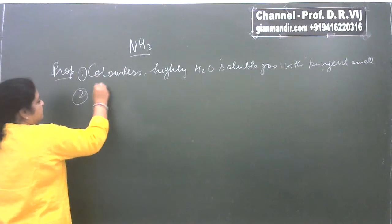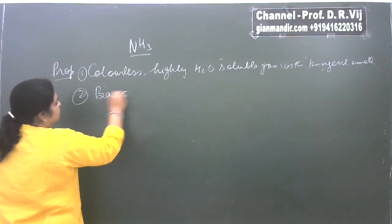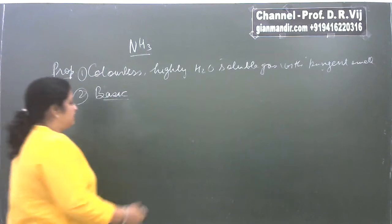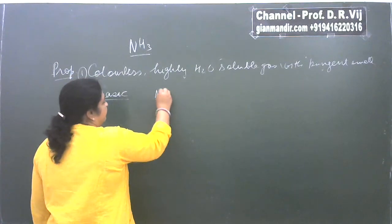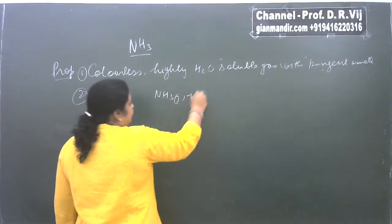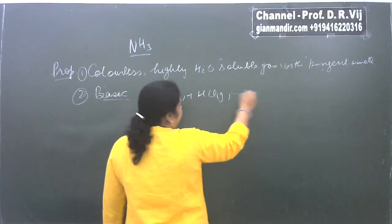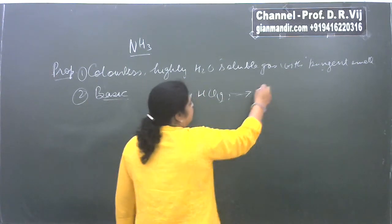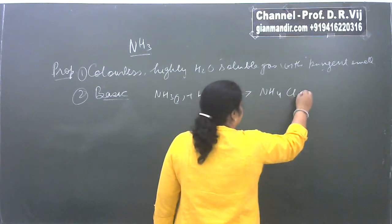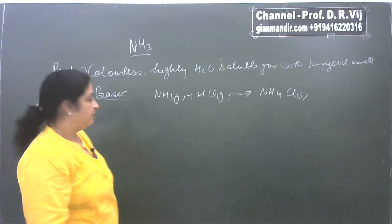Ammonia is basic in nature and has a tendency to react with acids. For example, ammonia gas reacts with hydrogen chloride gas to form the salt ammonium chloride in the solid state.